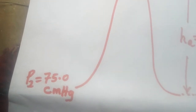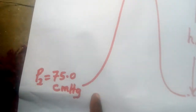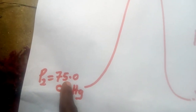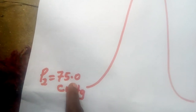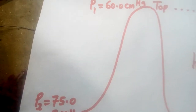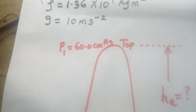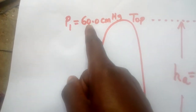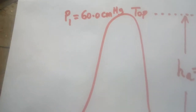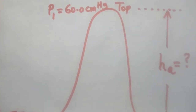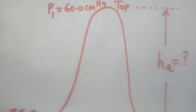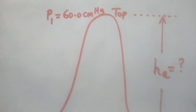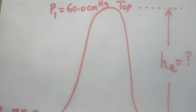At the bottom, the reading was different — let's take an example: 75.0 centimeters of mercury. Then at the top, the reading was also different: 60.0 centimeters of mercury. So he realized that the readings were not the same. Why were these readings different?